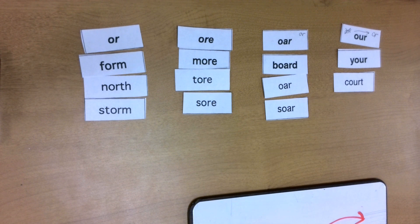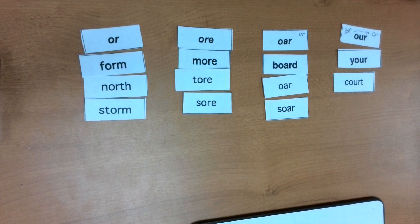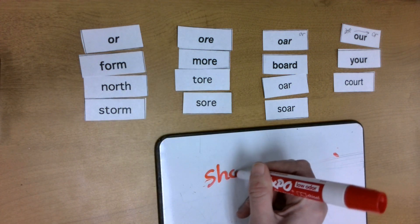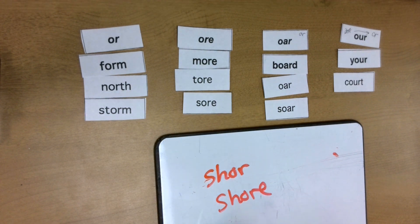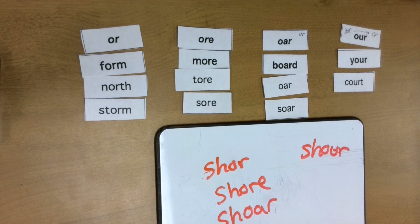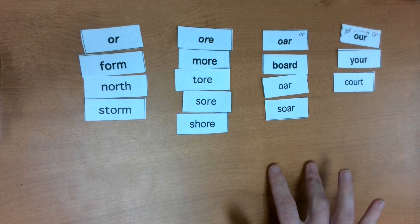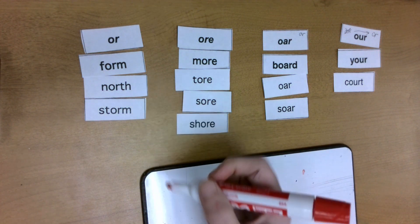My next word is SURE. Tap that out with me. Again, you can write it lots of different ways — it's not going to be spelled like this or like that. How about SURE like this, or SURE like that? Which one looks right to you? Yeah, this one.